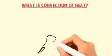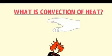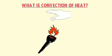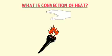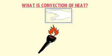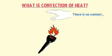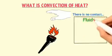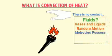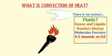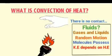Now let me explain the concept of convection of heat. If you place your hand slightly above the fire, you feel the hotness of the fire. In the previous section, we learned that heat energy only flows when there is contact between the hot object and the cold object. But here, your hand doesn't touch the fire — there is no contact or medium. The scientific answer is simple. Fluids means gases and liquids, and the molecules of gases and liquids are in random motion. The kinetic energy of gas and liquid molecules depends upon heat energy or temperature — keep this point in mind.